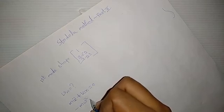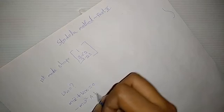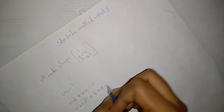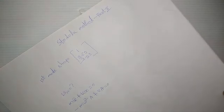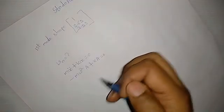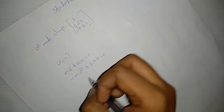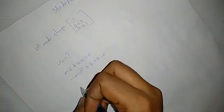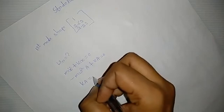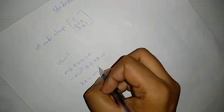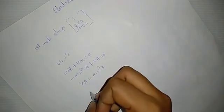Minus m omega squared a plus ka equals 0, taking x equals a sin omega t. So ka equals m omega squared a, or...